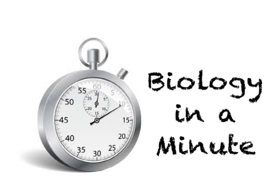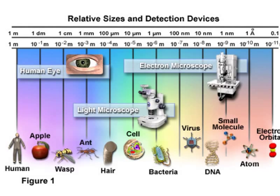Hello, and welcome to another edition of Biology in a Minute. This is Ms. Feldbusch. Making observations is one of the most important things you can do in science. A lot of observations can be made with the human eye, but sometimes we need to look at things smaller. In order to help us see things that are smaller, we have tools that are called microscopes. Today, I'm going to take a few minutes to talk about different types of microscopes that are used by biologists.